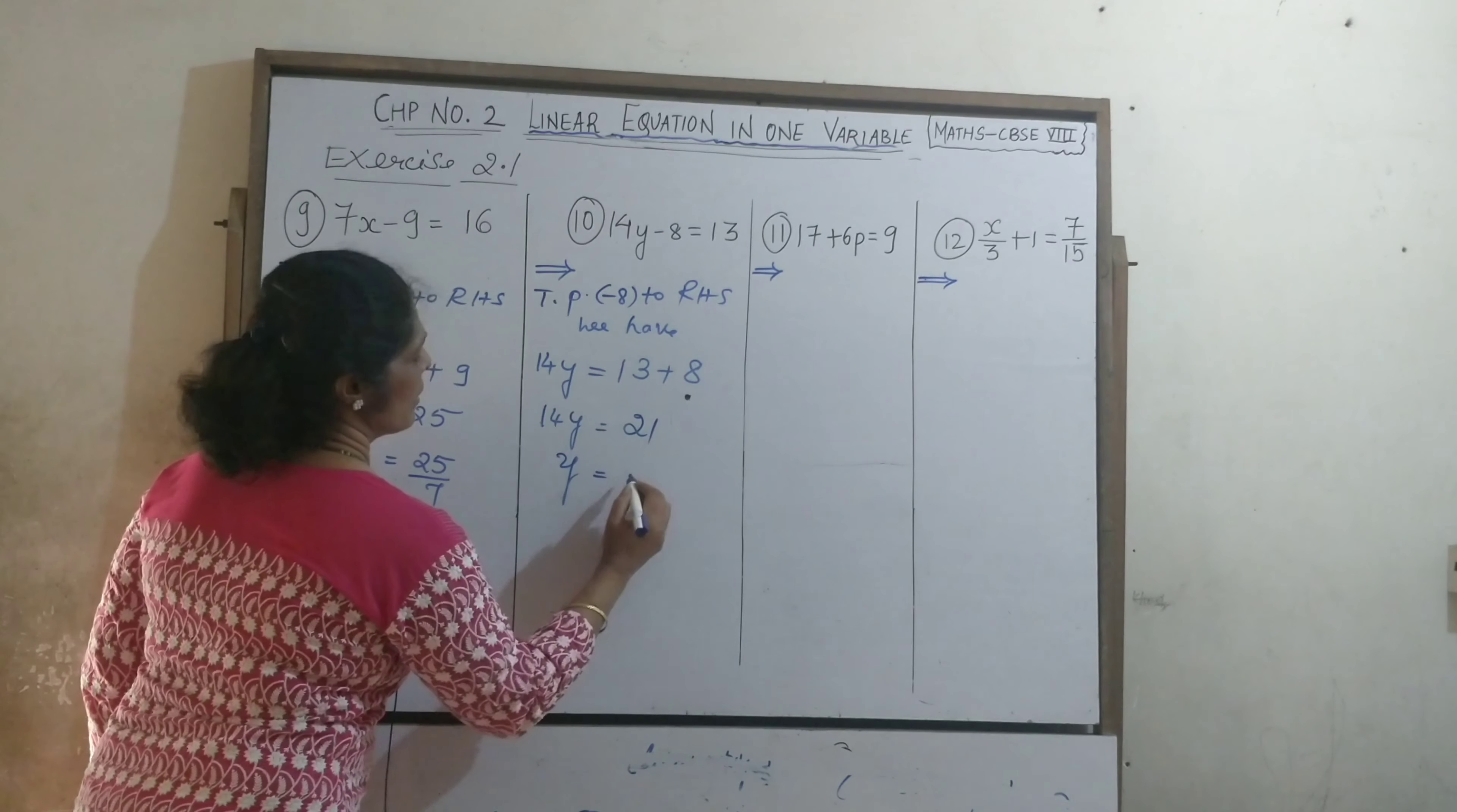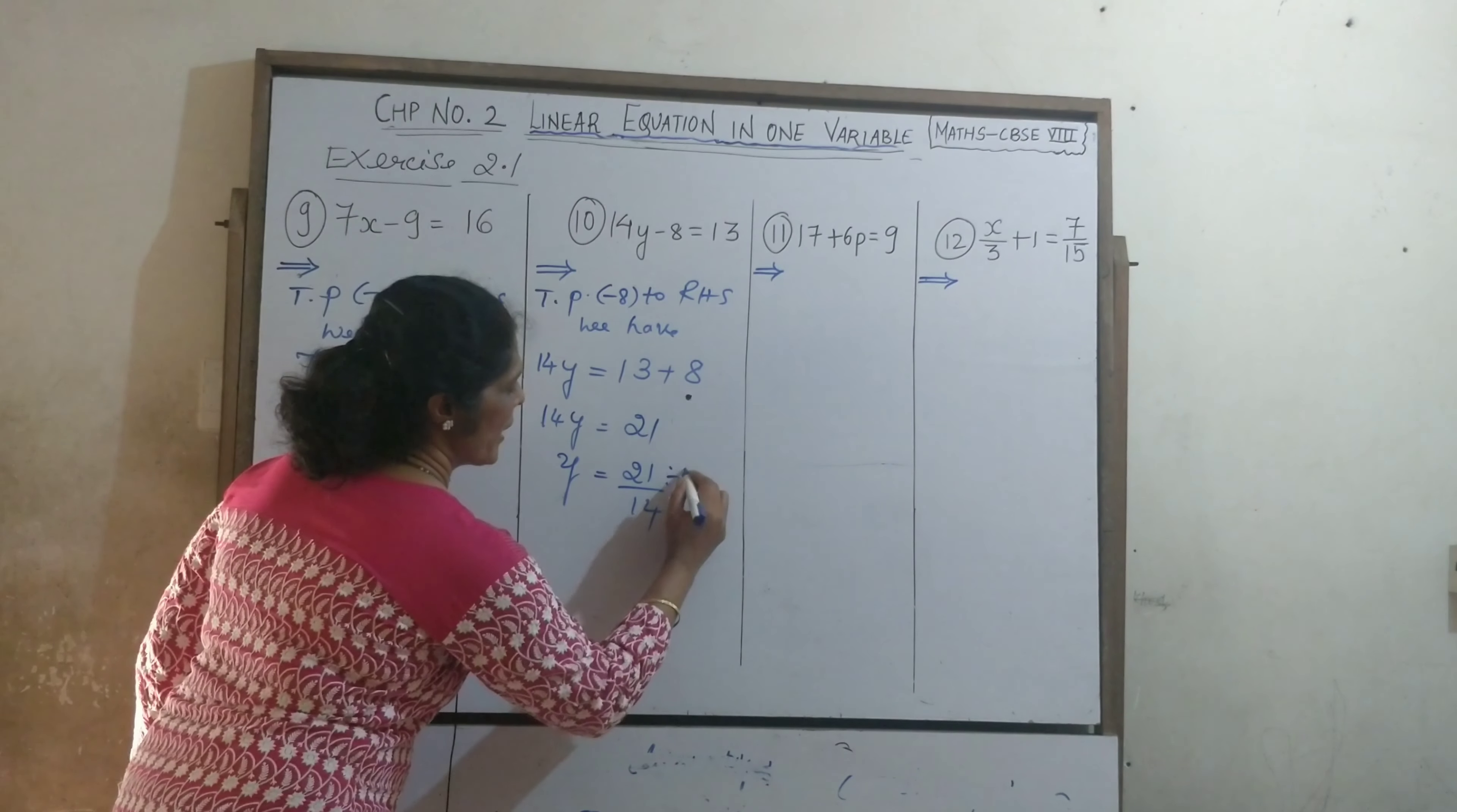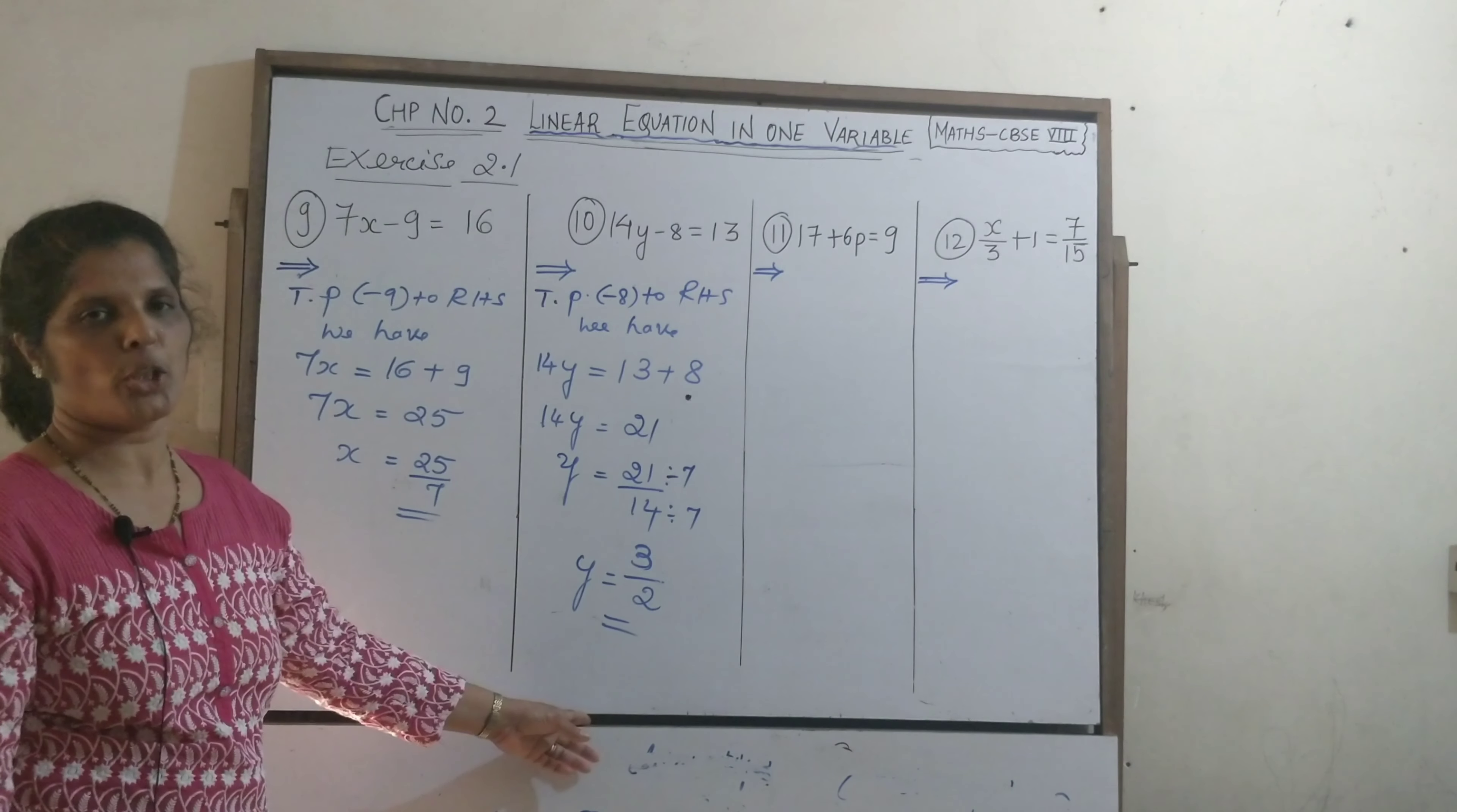Now, y is equal to 21 upon 14. 21 and 14 are in the 7th table. Divided by 7, 7 threes are 21, 7 twos are 14. So, the value of y is equal to 3 upon 2.